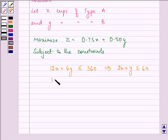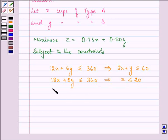Similarly, the other will be 18X plus 0Y should be less than or equal to 360. This implies that the value of X should be less than or equal to 20. And further we have 6X plus 9Y should be less than or equal to 360. That further implies 2X plus 3Y should be less than or equal to 120.